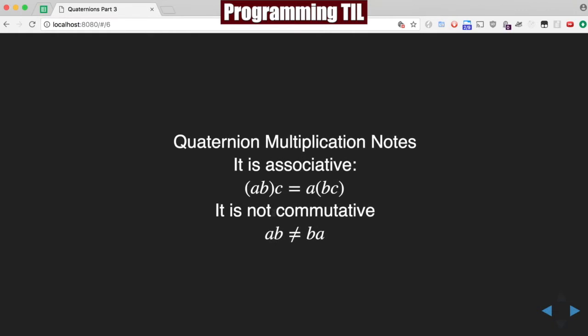So, it is associative, so AB times C is equal to A times BC, but it's not commutative, so you can't change the order of the quaternions. So, AB is not the same as BA.